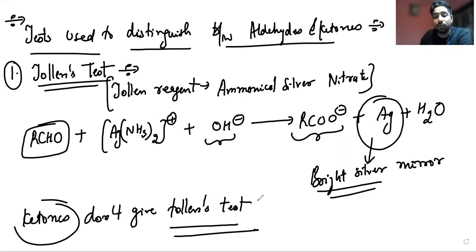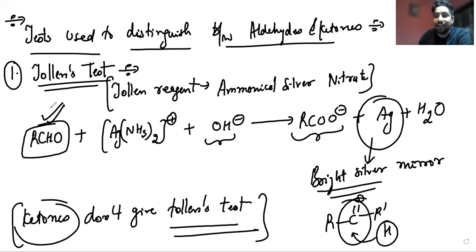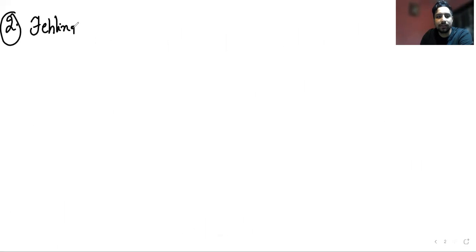Ketones don't give the Tollens test because they do not have the hydrogen atom attached to the carbonyl group. In ketones we have R-C(=O)-R', and the hydrogen atom is not present on this carbonyl carbon, which is why a ketone is not able to give the Tollens test. Aldehydes easily give the Tollens test because the carbonyl carbon in an aldehyde does have this hydrogen.